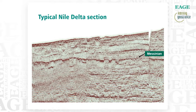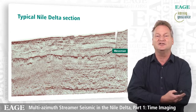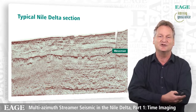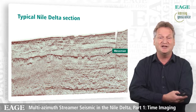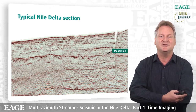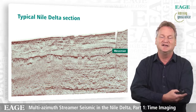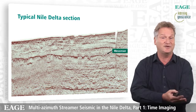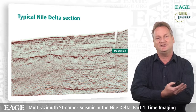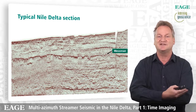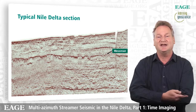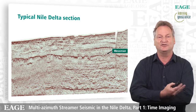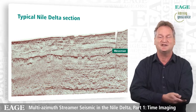This is a typical regional line. You can see a dipping sea bottom basically moving out from the coast. The water bottom is reasonably rugose. Then you have the Messinian layer, which is really the culprit of a lot of the issues that we have in the Nile Delta. The Messinian is a layer that was deposited a couple of million years ago when the Mediterranean dried up, and it contains all sorts of salts, sands, and shales. The complexity of that causes imaging problems in the deeper section.